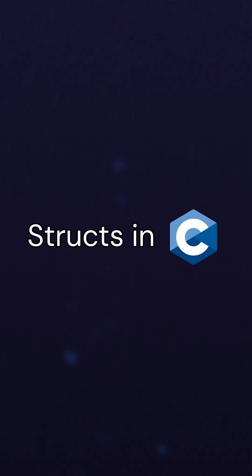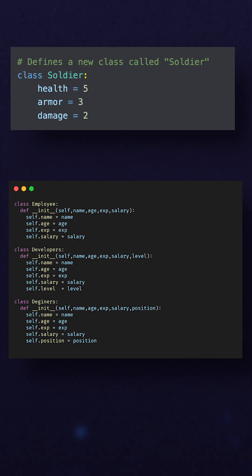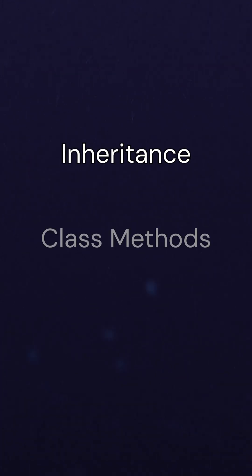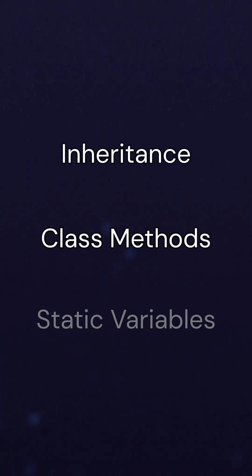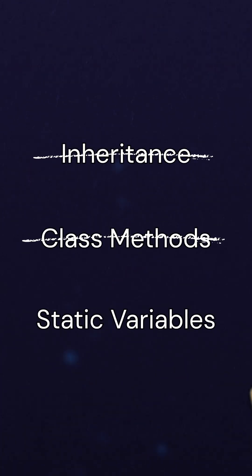Structs in C are similar to classes or objects in Python or JavaScript, but they are a bit simpler. There aren't any concepts of things like inheritance or class methods or static variables, nothing like that.